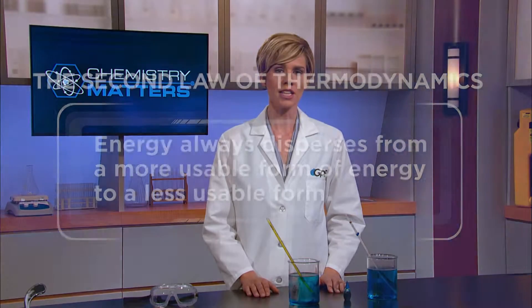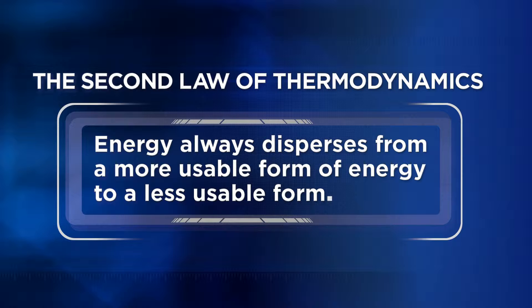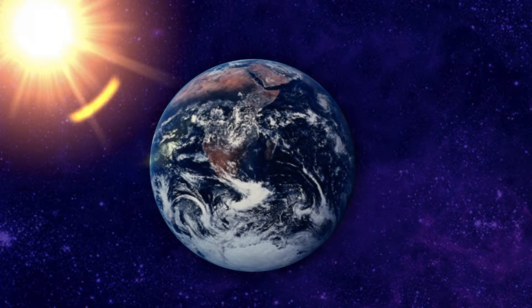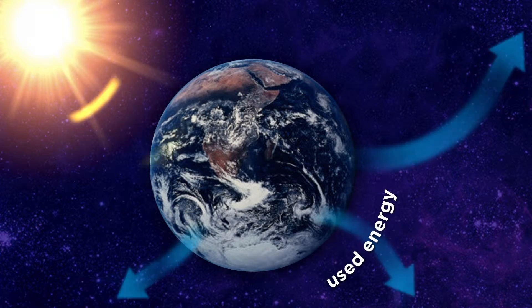So, if energy lasts forever, why do we have to worry about conserving energy? That question drove scientists to discover the second law of thermodynamics, which tells us that energy always disperses or changes from a more usable form of energy to a less usable form. For example, the solar energy directly from our sun arrives to Earth in concentrated form, powering all of life as we know it.